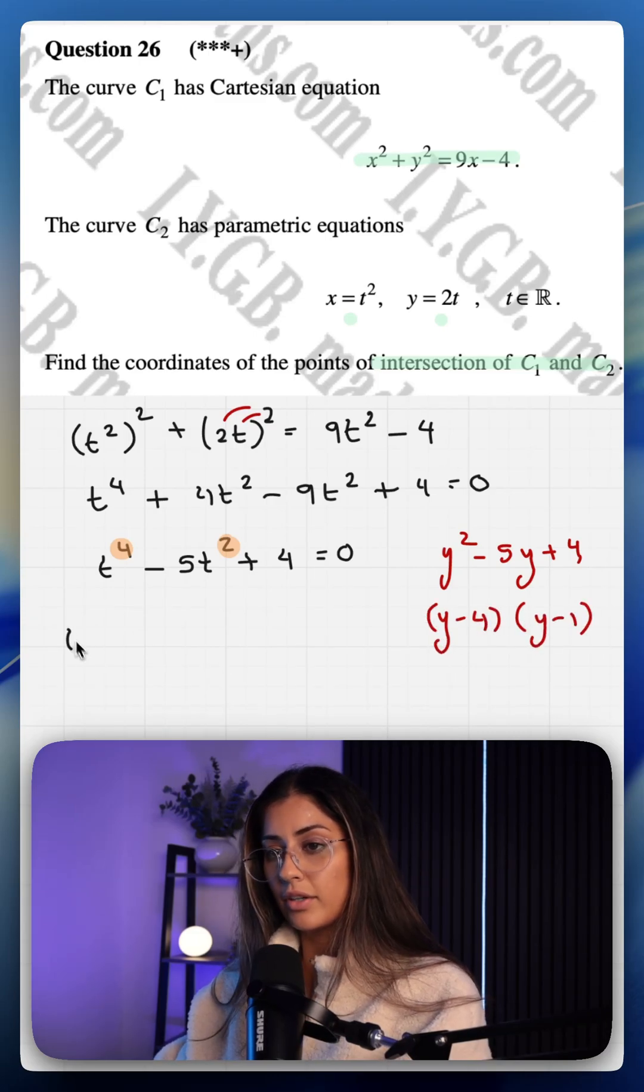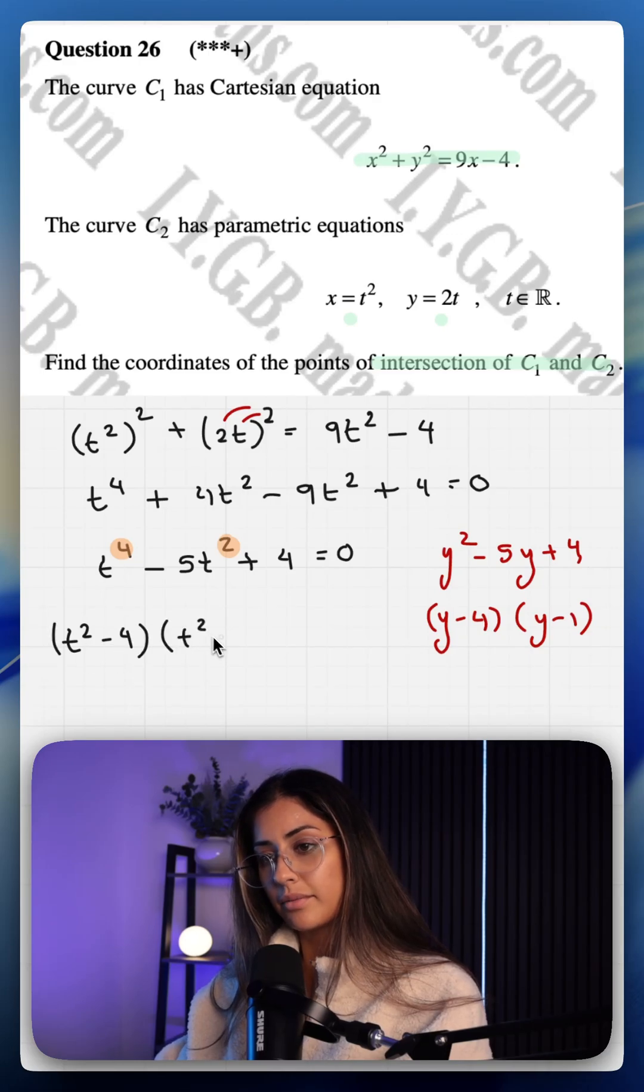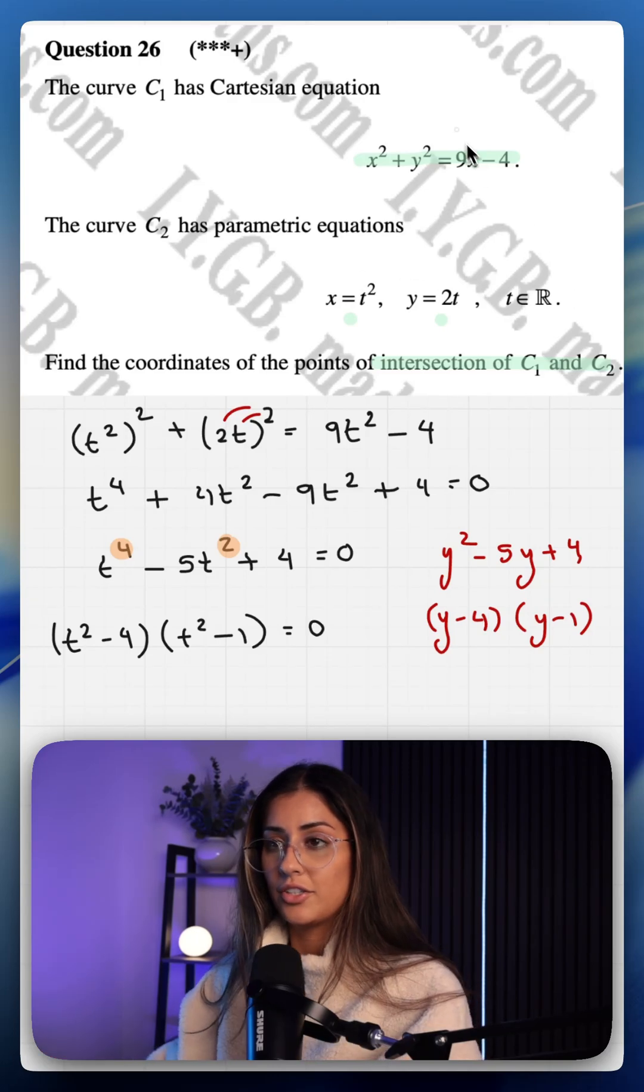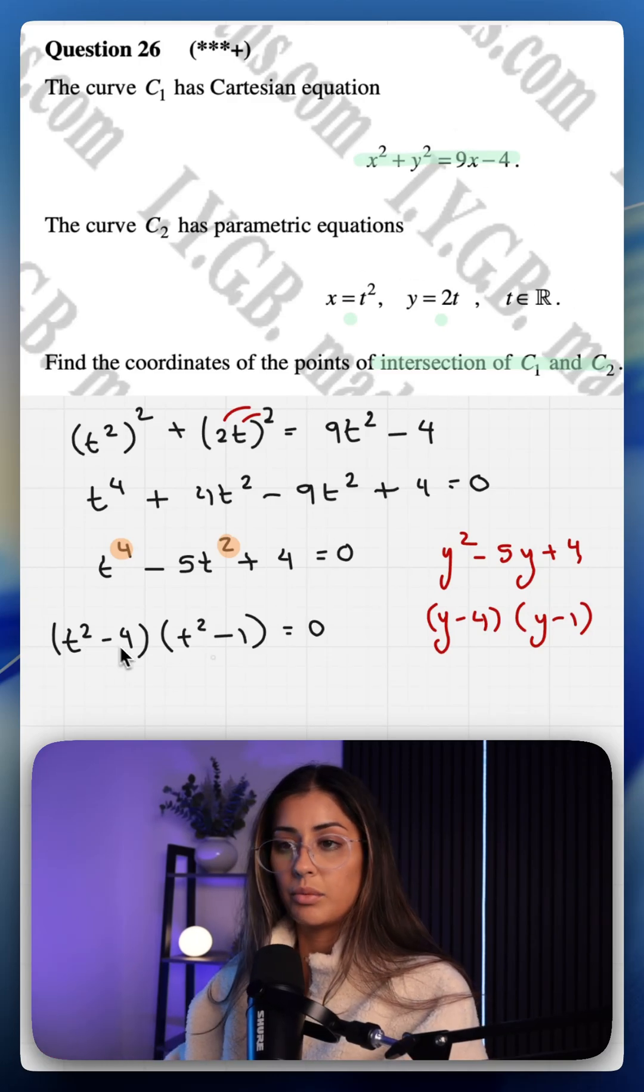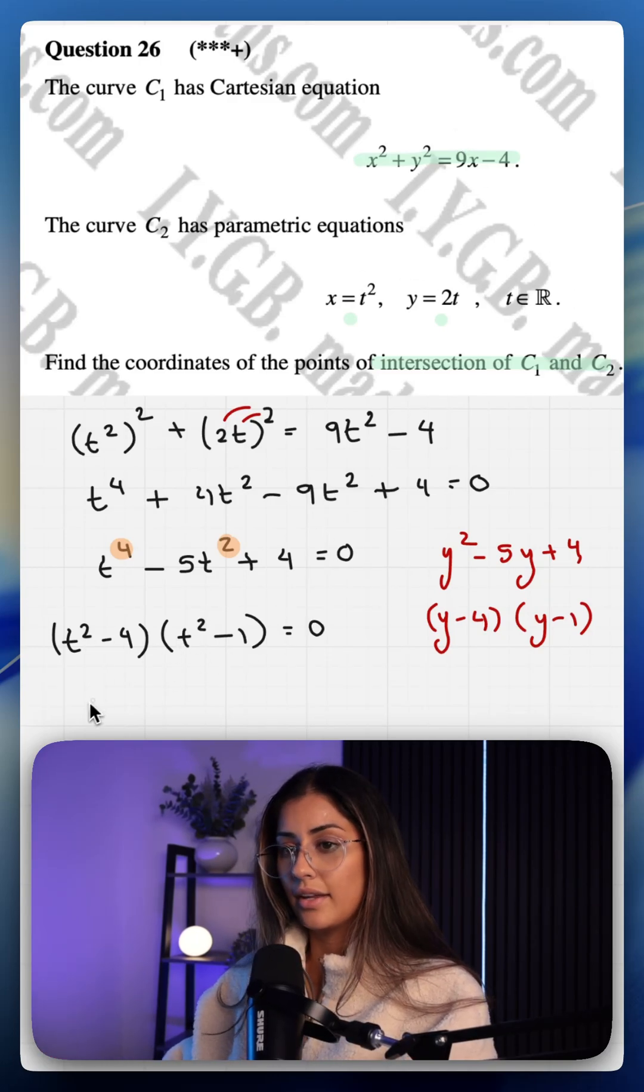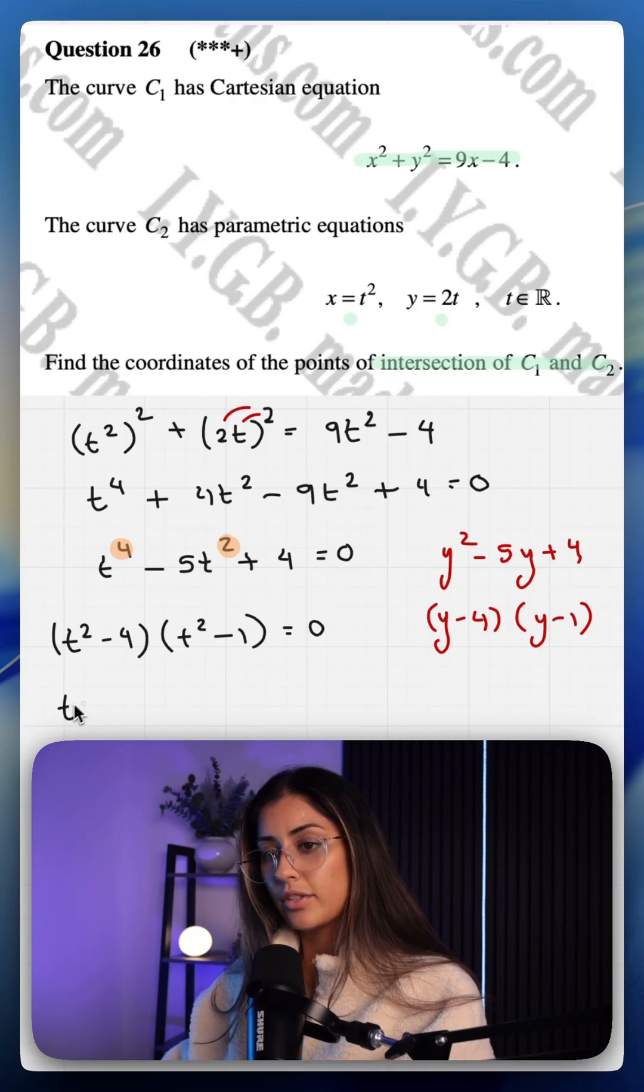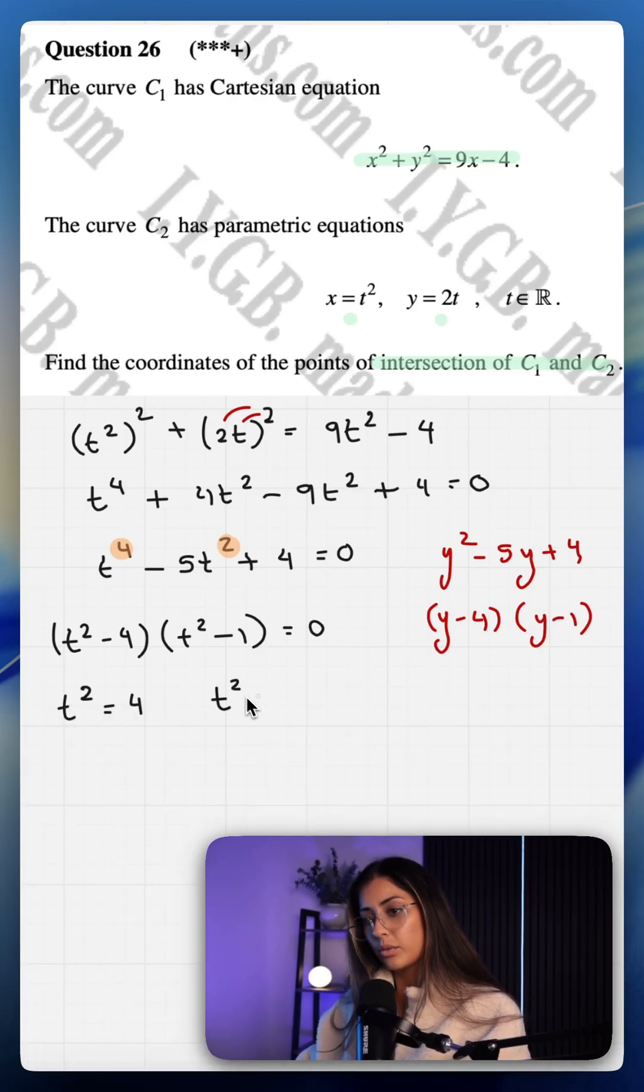So that means here we've got t squared minus 4 and t squared minus 1 equals 0. So where our parametric and Cartesian curves intersect it would be the solutions to this equation here. And we can set these both to 0 to get t squared equals 4 and t squared equals 1. Therefore t is equal to plus or minus 2 and t squared can also be equal to plus 1 or minus 1.